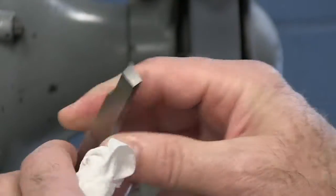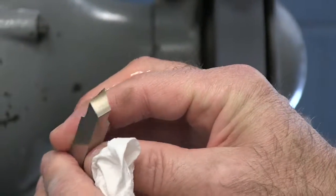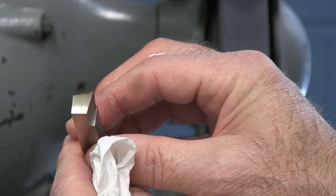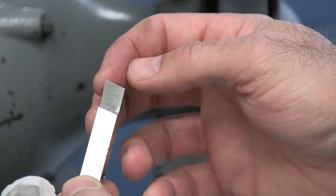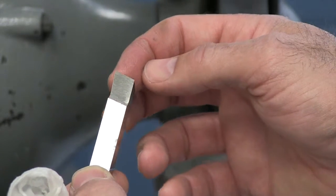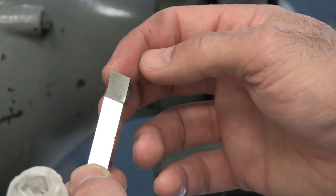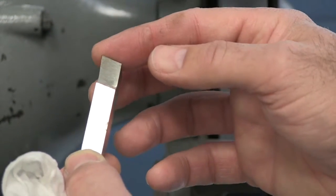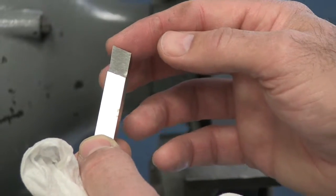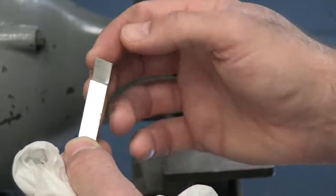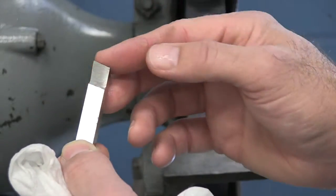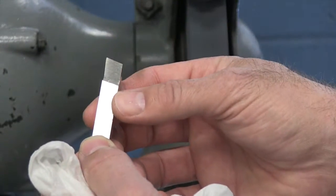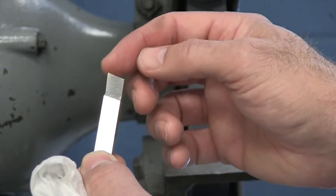So now that we have our tool bit ground we can certainly check the angles. Now that we have this ground, our edge, our cutting edge is going to be somewhat fragile because it's a very sharp point right now. We're going to take this over to the honing stone and we're going to put a little radius on there and soften this. It'll actually do some better finishing work for us and it'll protect that point.